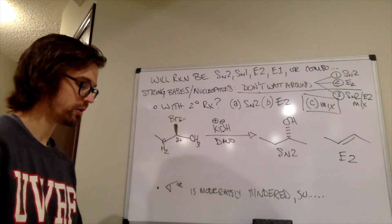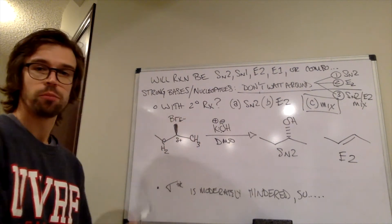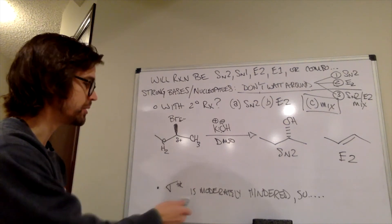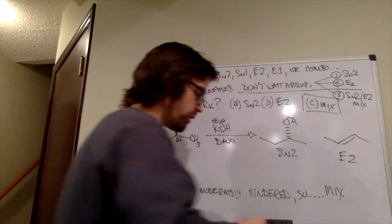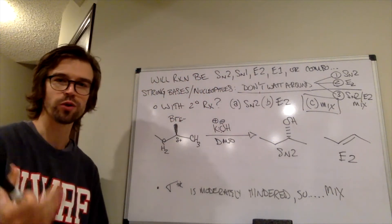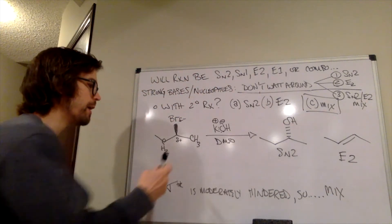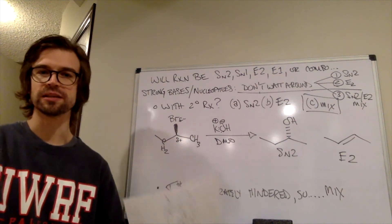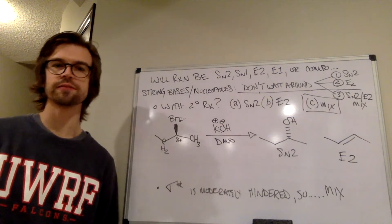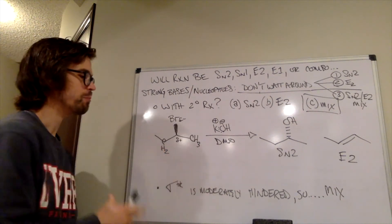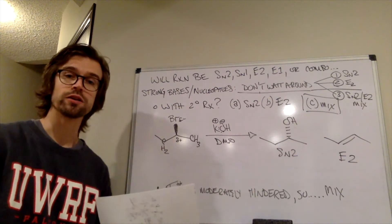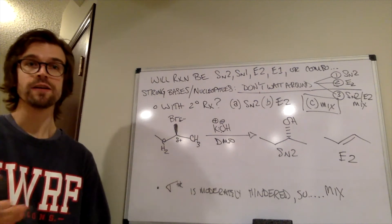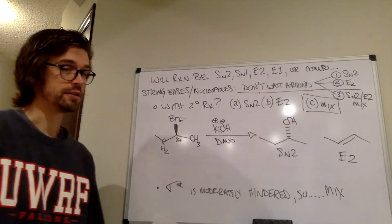So what happens with the secondary alkyl halide to our bullet point on our course notes? The sigma star is moderately hindered, so we get a mix. The nucleophile would rather, if it had the choice, if it could just be perfectly lined up, it would rather go to the sigma star to the bigger partial positive, but with the moderate steric hindering, it's just a fact that it's going to often bump into the hydrogens instead, and that would result in the E2.